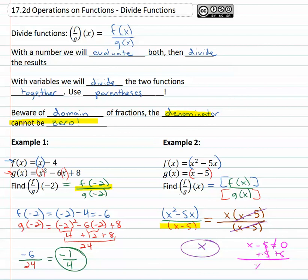That's the domain to be aware of. That means our solution for the quotient will always be x as long as x is never 5, because that won't work in this function.